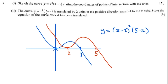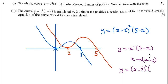So if we look at the original curve, which is x squared bracket three minus x, we're going to swap x for x minus two. So every time I see an x, I'm going to write x minus two instead.